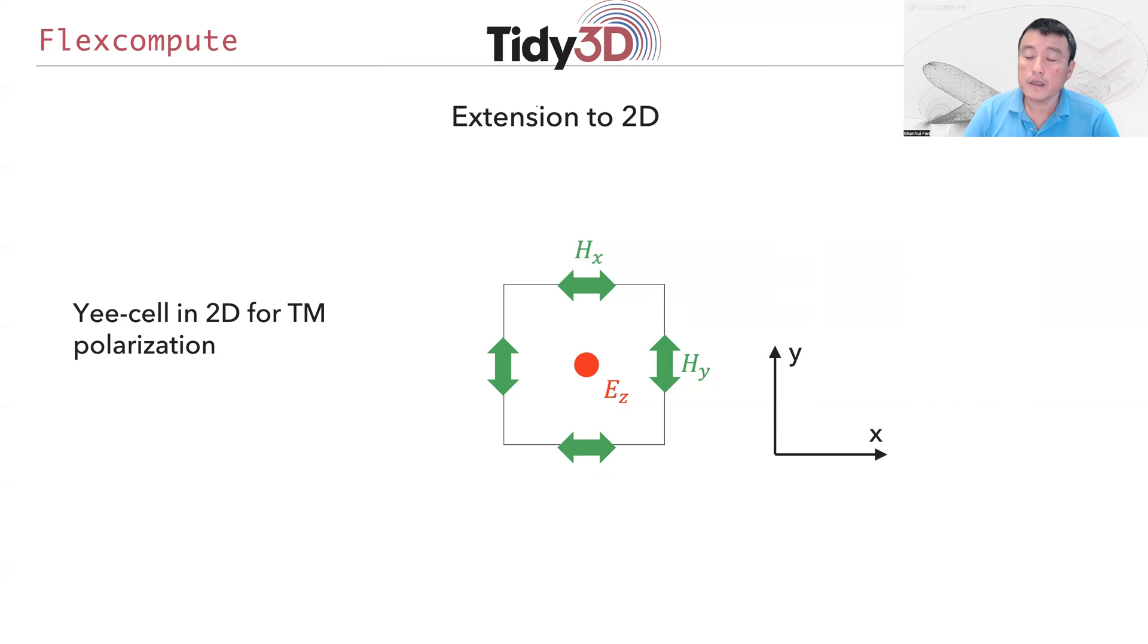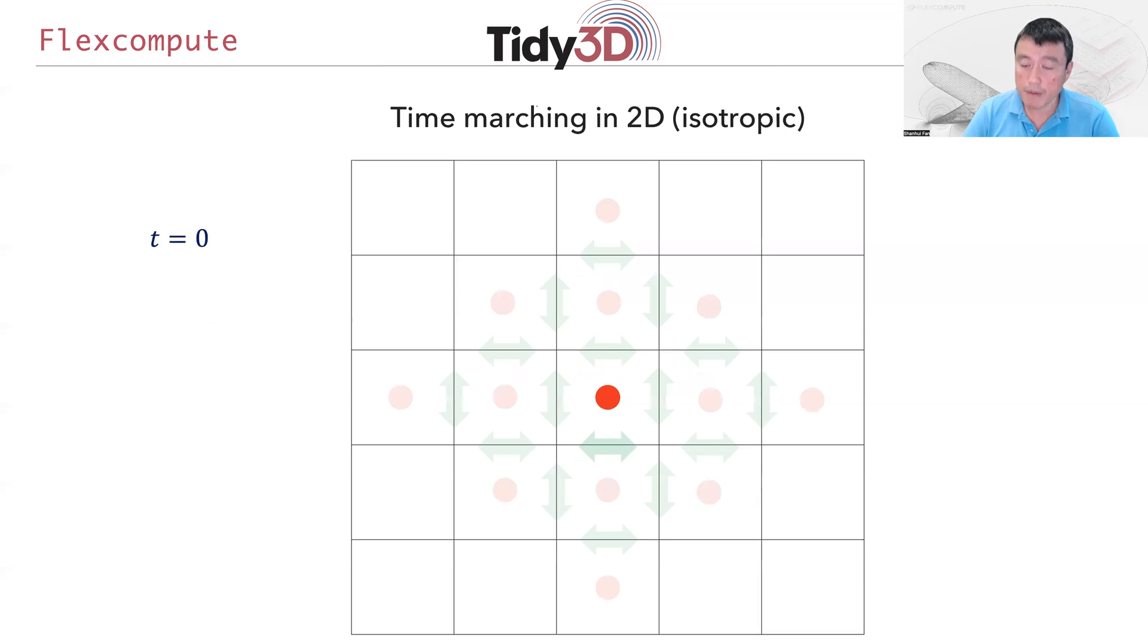As we've seen in the one-dimensional case, the key point in deriving the CFL condition is to understand the speed over which information can propagate on the numerical grid. Let's illustrate how the data dependency propagates as we progress in an FDTD simulation. Suppose at time equal to zero, we have information about the Ez component at the center.